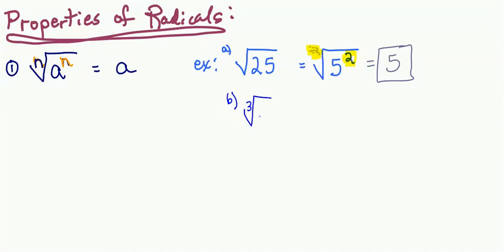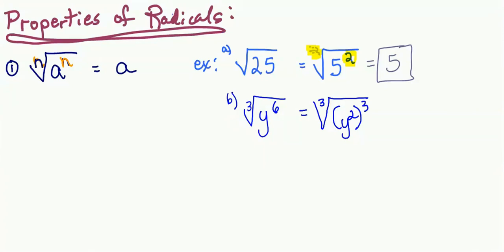Let's look at the cube root of y to the sixth power. y to the sixth — six is a multiple of three, so we can use exponent rules to make this a cube. What times three would be six? A two. So y to the sixth can be written as y squared, all to the third power. Now my index of three matches the outside exponent, so whatever's inside the parentheses is my answer — y squared.